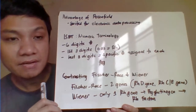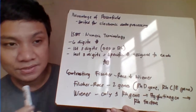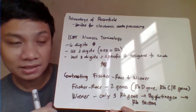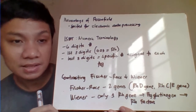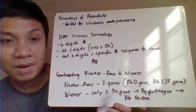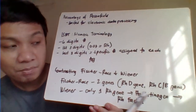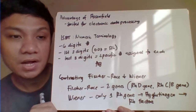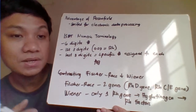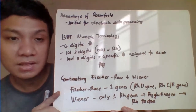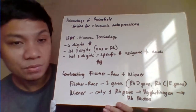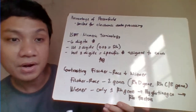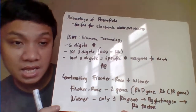Contrasting Fisher & Race versus Wiener: Fisher & Race believe there are two closely related genes — RHD and RHCE — responsible for expression of RH antigens. Wiener, on the other hand, believed there is only one RH gene which controls production of the RH agglutinogen, which then gives rise to several RH factors and eventually to RH antigens.